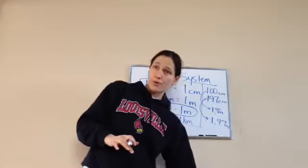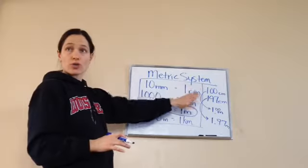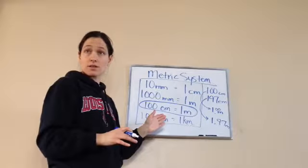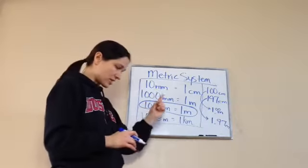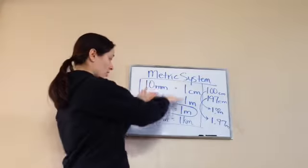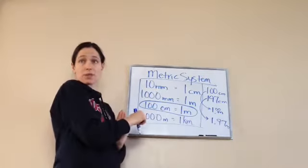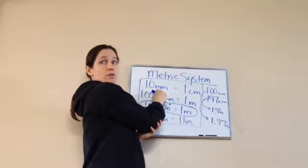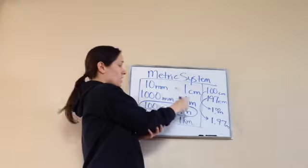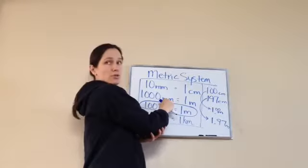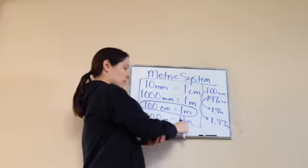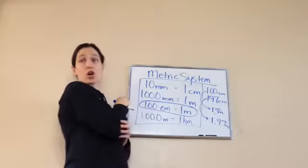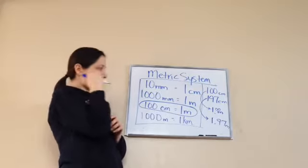Whatever information they ask for, you find on your chart which one has both measurements and you use that to find the answer. This problem was talking about centimeters and meters, so we had to find the one on the chart that covered both. The first entry talks about centimeters and millimeters — not what we need. The third entry covers centimeters and meters — that's the one we want. The chart is going to come in handy for these problems.